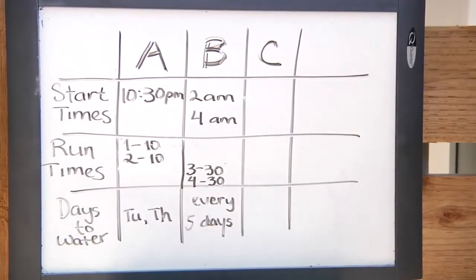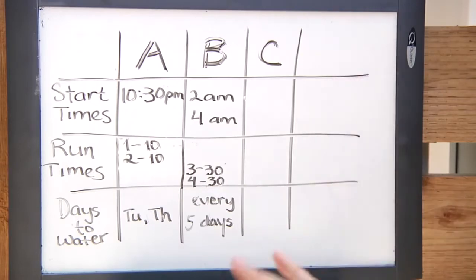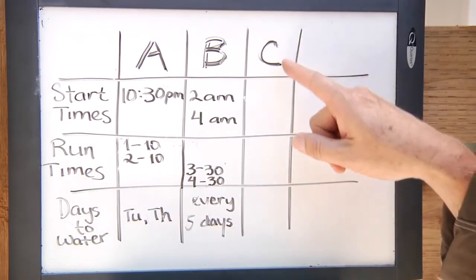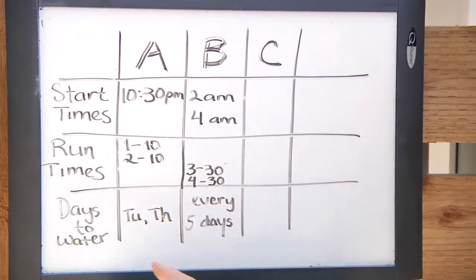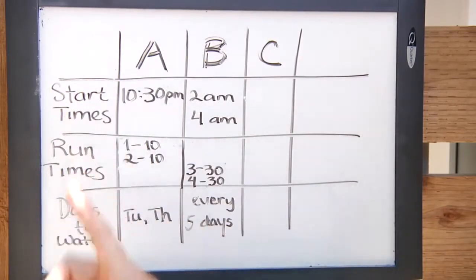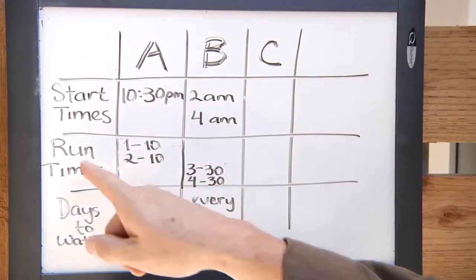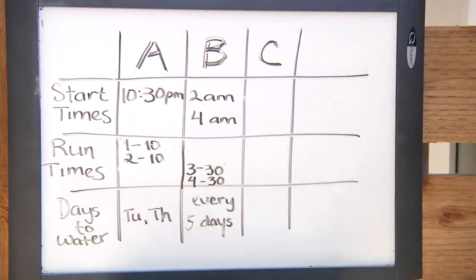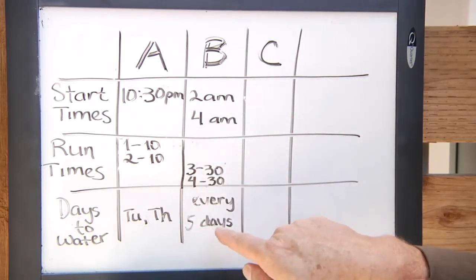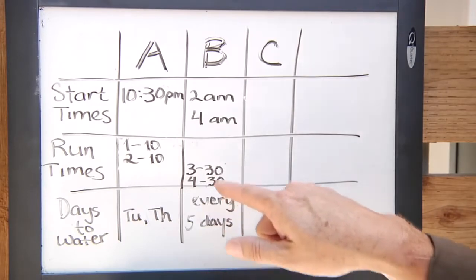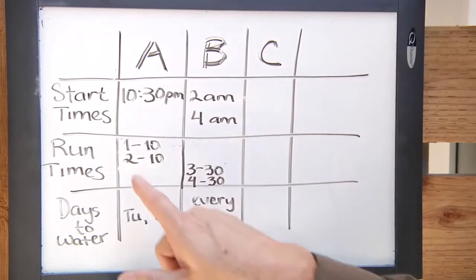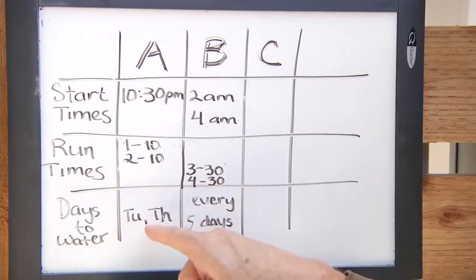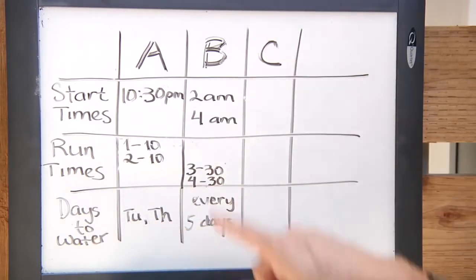To explain the use of the different programs A, B, and C, we have a chart here like a tic-tac-toe board with columns A, B, and C. In this example we're not putting anything in program C. Each program has all three ingredients: start time, run time, and days to water. We're splitting our run times for individual stations over two programs because stations three and four have a different watering day requirement — every five days for fruit trees — while stations one and two are grass zones that only water on Tuesday and Thursday.